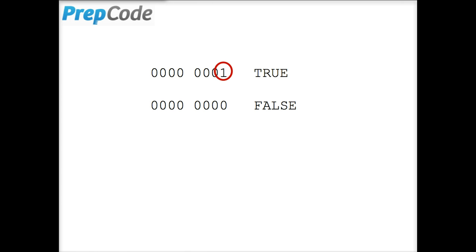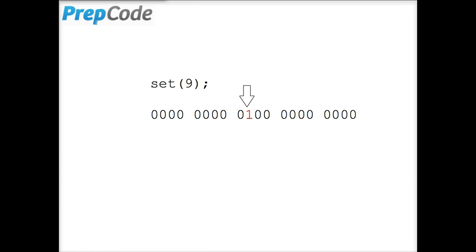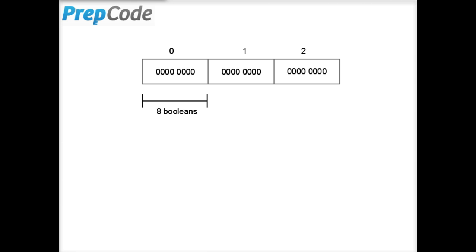With this scheme, we set the i bit to 1 to denote i as a member of the set, and to 0 to exclude it. Now, we can represent the state of 8 integers with just 1 byte. Much better.